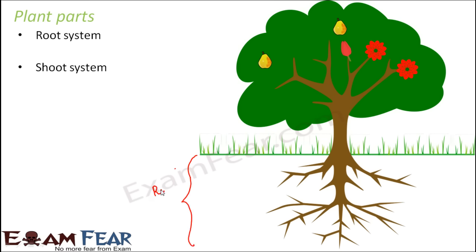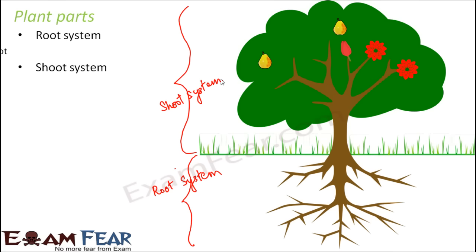The root system primarily refers to those parts of the plant which lie below the ground. In the root system, different plants have different types of roots. Normally a root goes below the ground; from the primary root, secondary roots branch out, and from the secondary roots, tertiary roots branch out further.